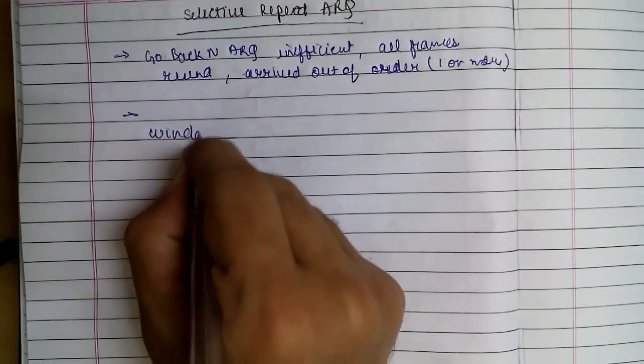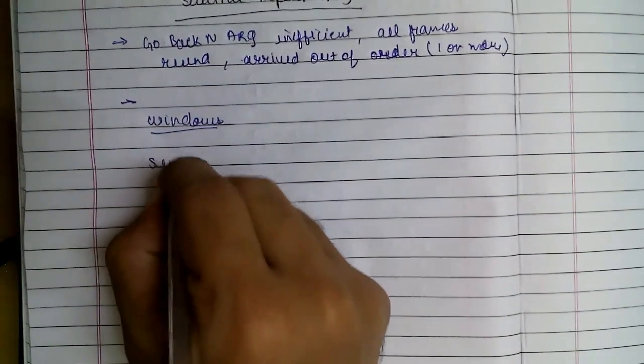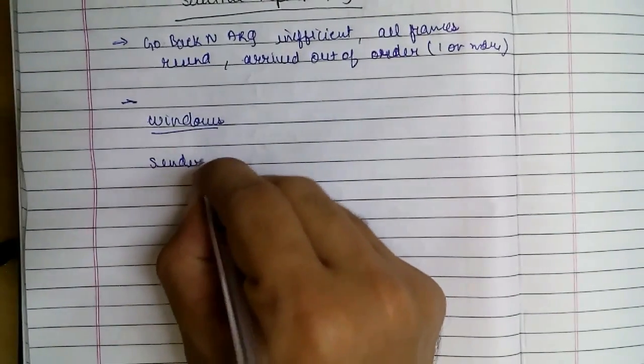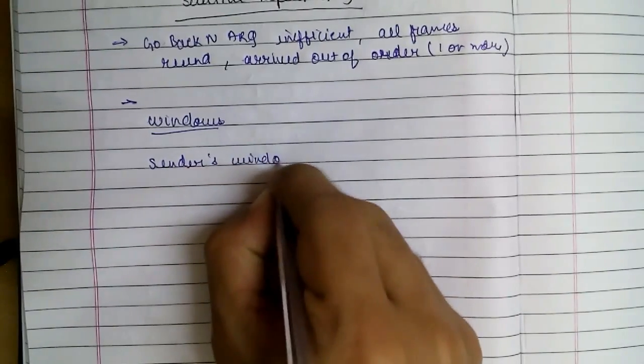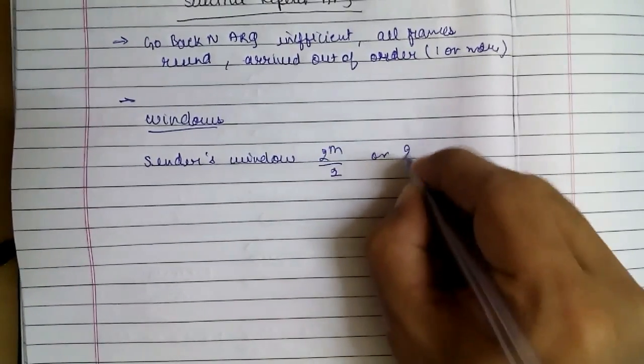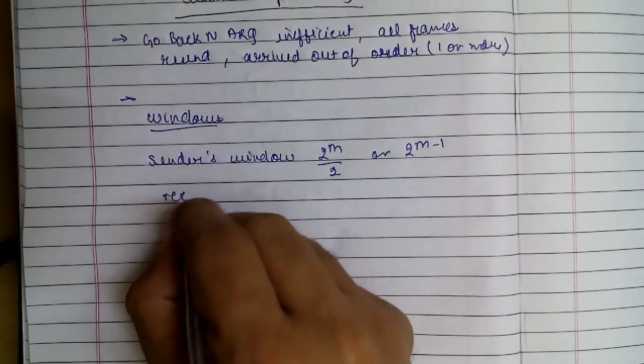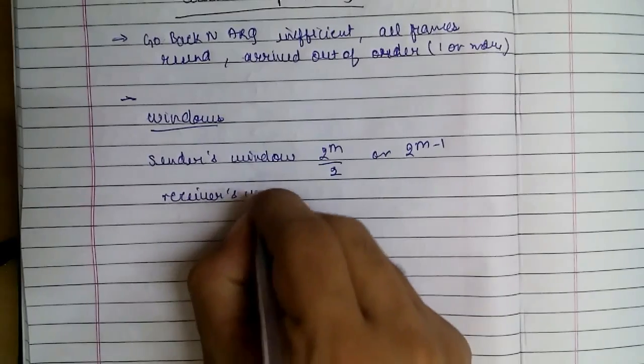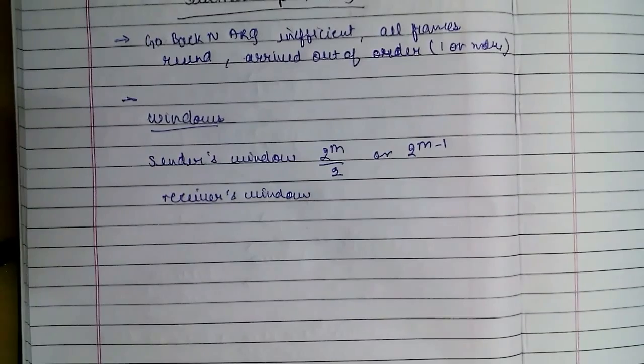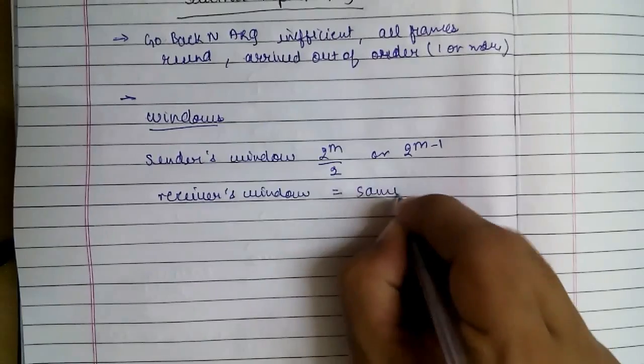The window size allowed is different from that of Go Back N ARQ. Sender's window is of the size 2 raised to M by 2, or we can say 2 raised to M minus 1. And receiver's window, which was of size 1 in the previous protocols, is the same size as the sender.